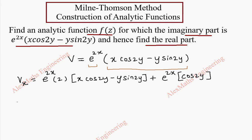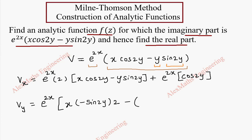Now we find vy, the partial derivative with respect to y. Since e^(2x) is constant with respect to y, no product rule is needed for that factor. We keep e^(2x) and differentiate: x cos2y gives minus x sin2y times 2, and for y sin2y we apply the product rule, giving sin2y plus y cos2y times 2.